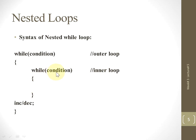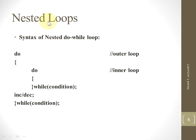If the inner loop condition is true, the body will be executed. If the condition becomes false, the control goes back to the outer loop and increment/decrement will be performed. Then the control goes back to the outer loop condition — if true, it comes to the inner loop again and the inner loop executes again and again until the condition becomes false. If the outer condition is false, the control goes outside of the outer loop body.